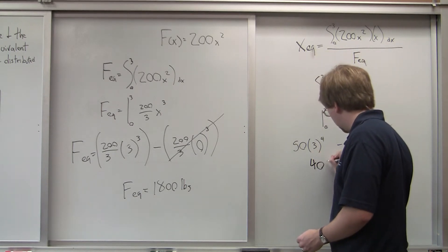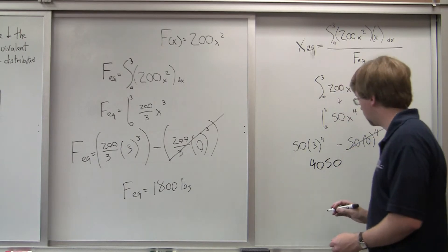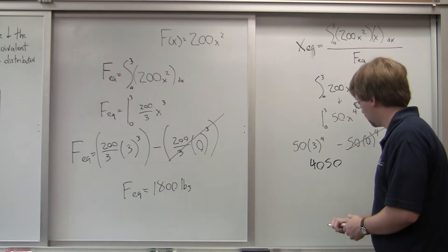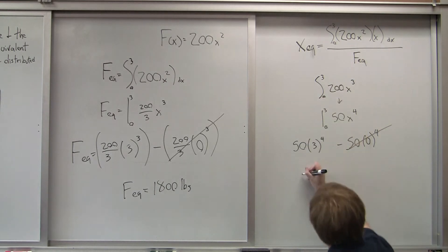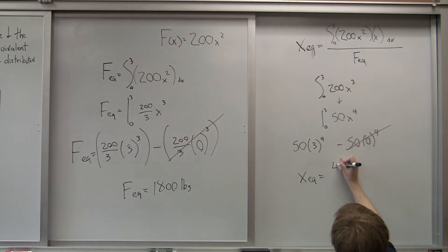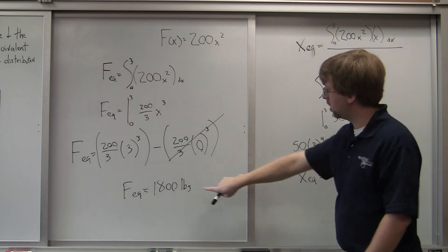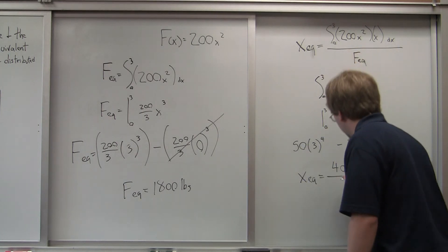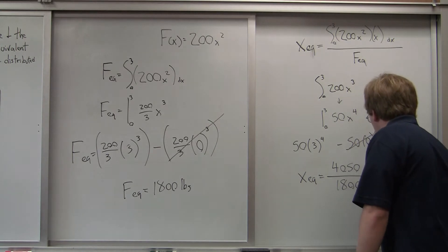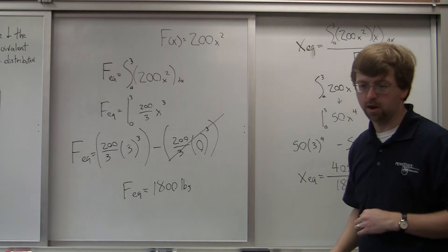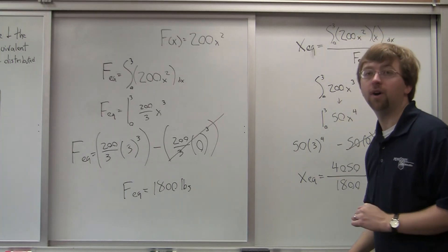So 4,050. Alright, and so I'm going to have x e q is going to be equal to that 4,050 over my value for f e q, which is this 1800 pounds. So over 1800, and that gives me a value of 2.25 feet.